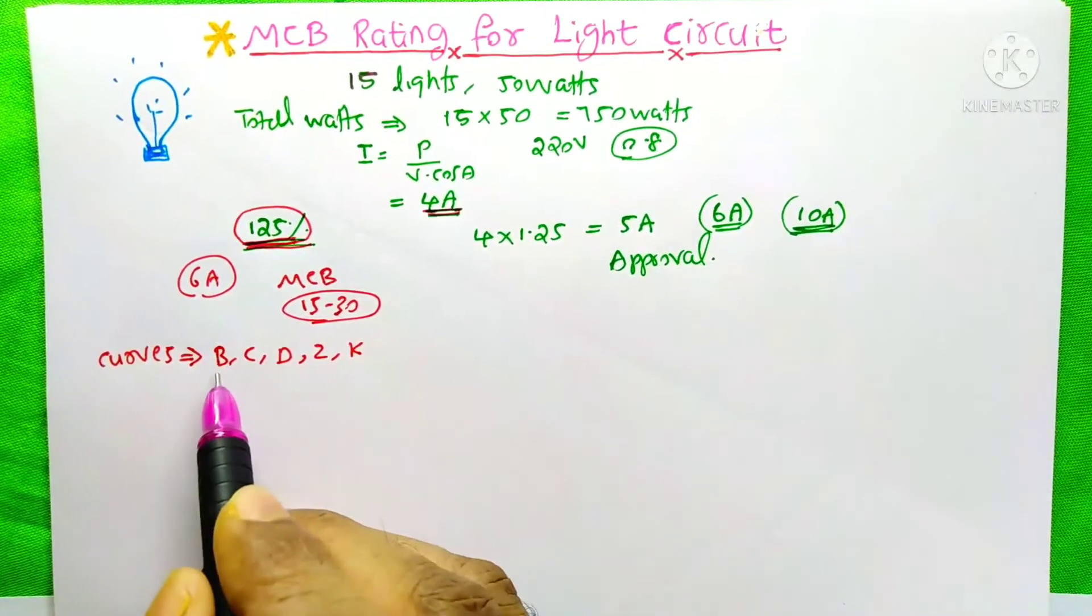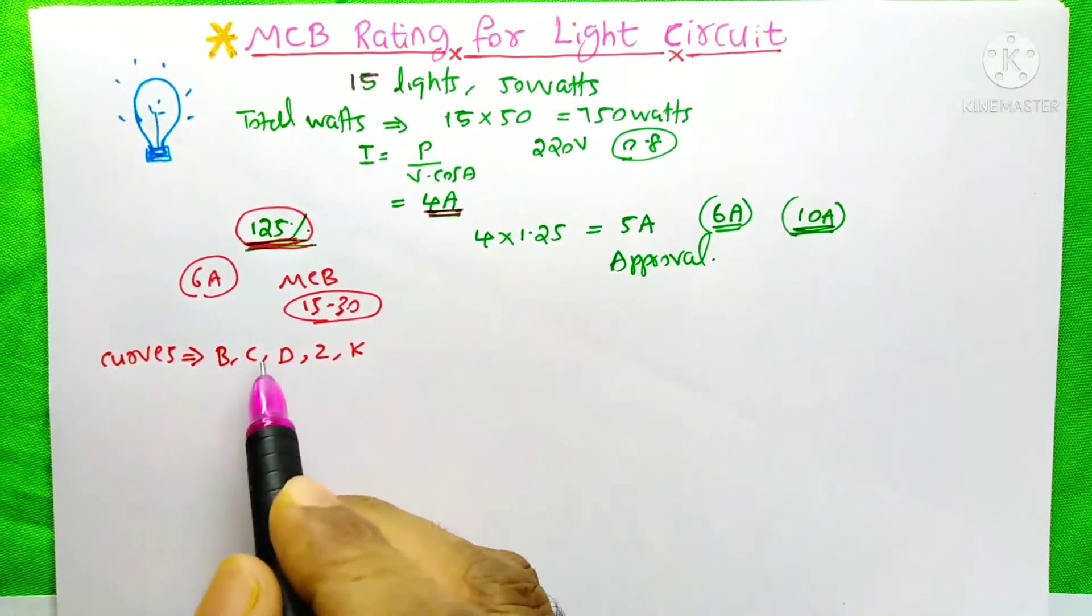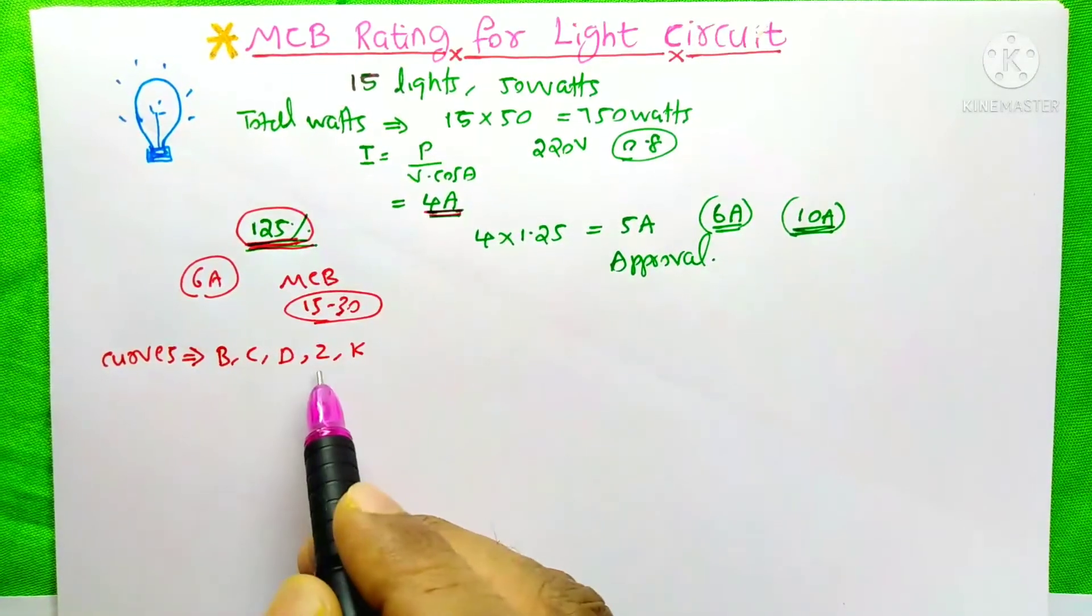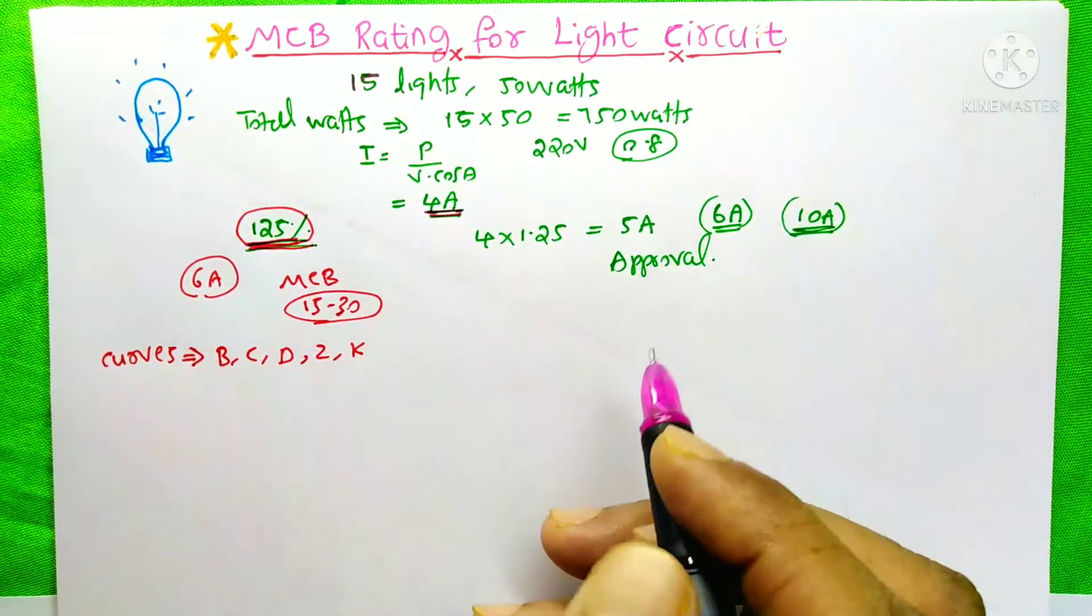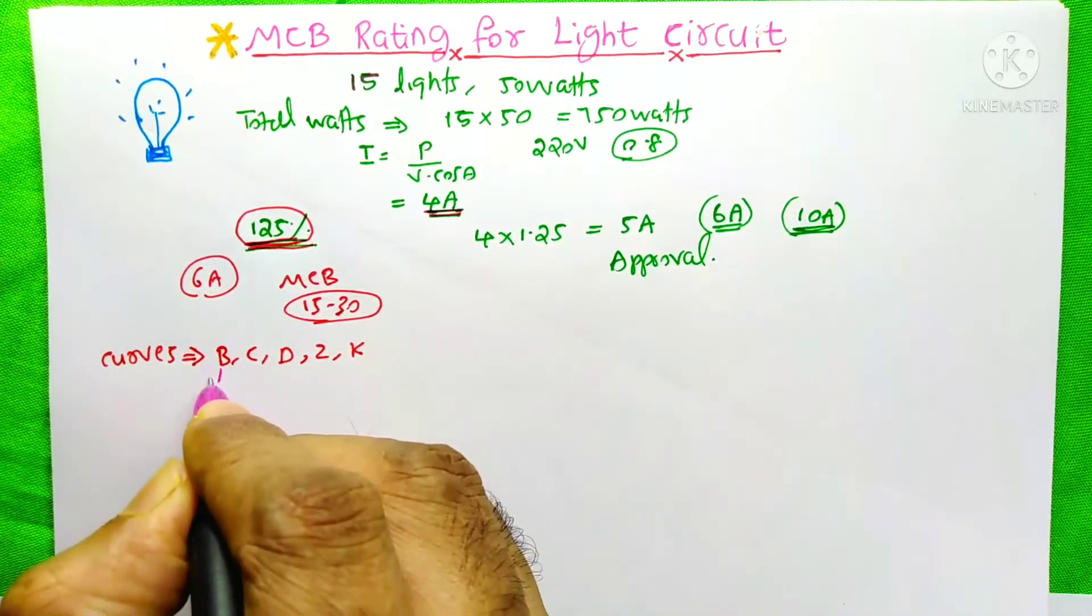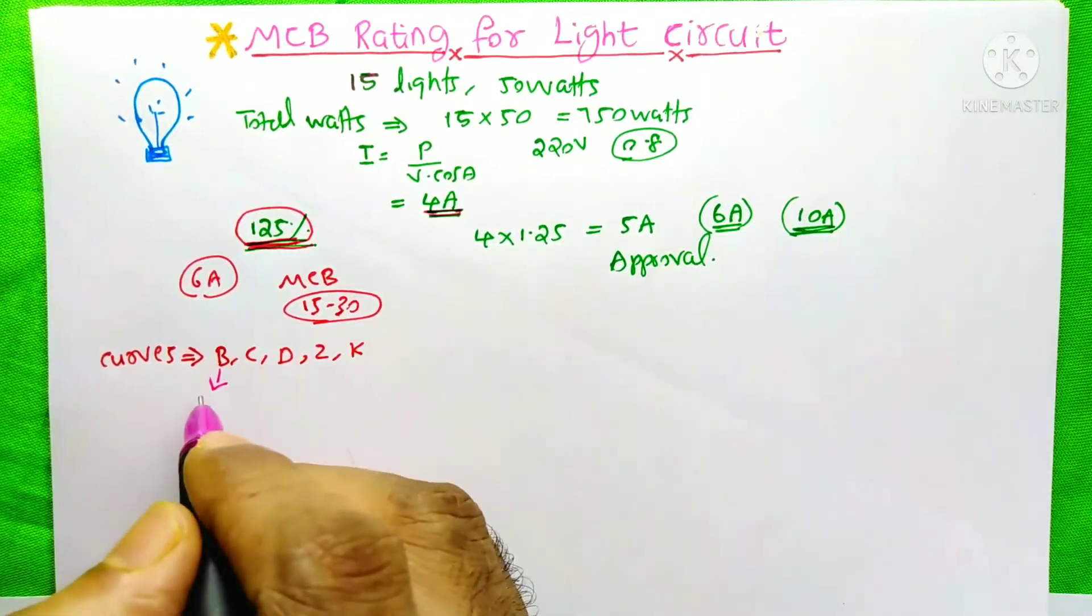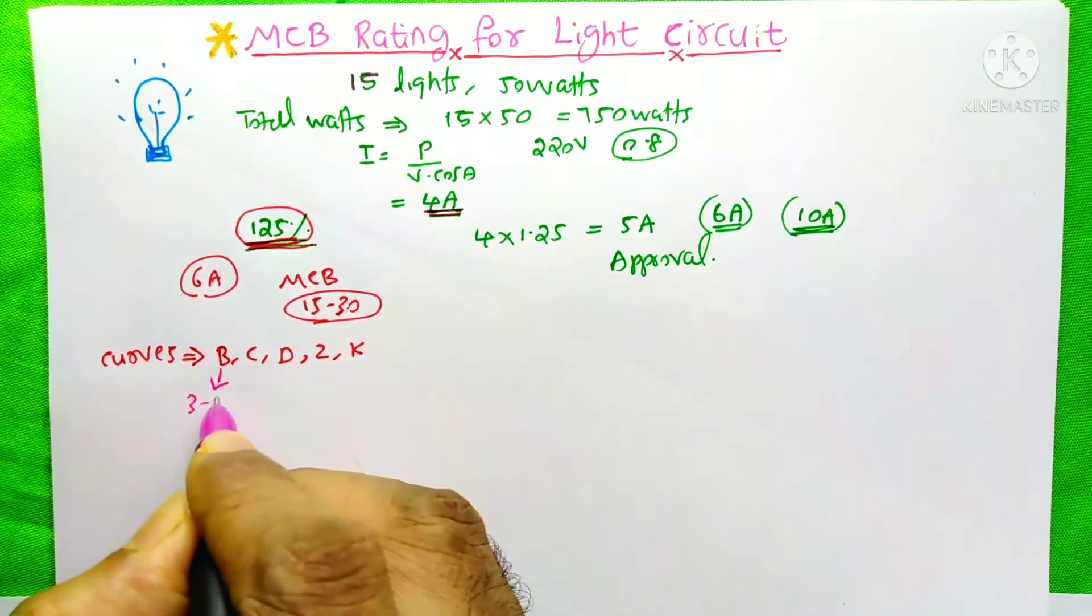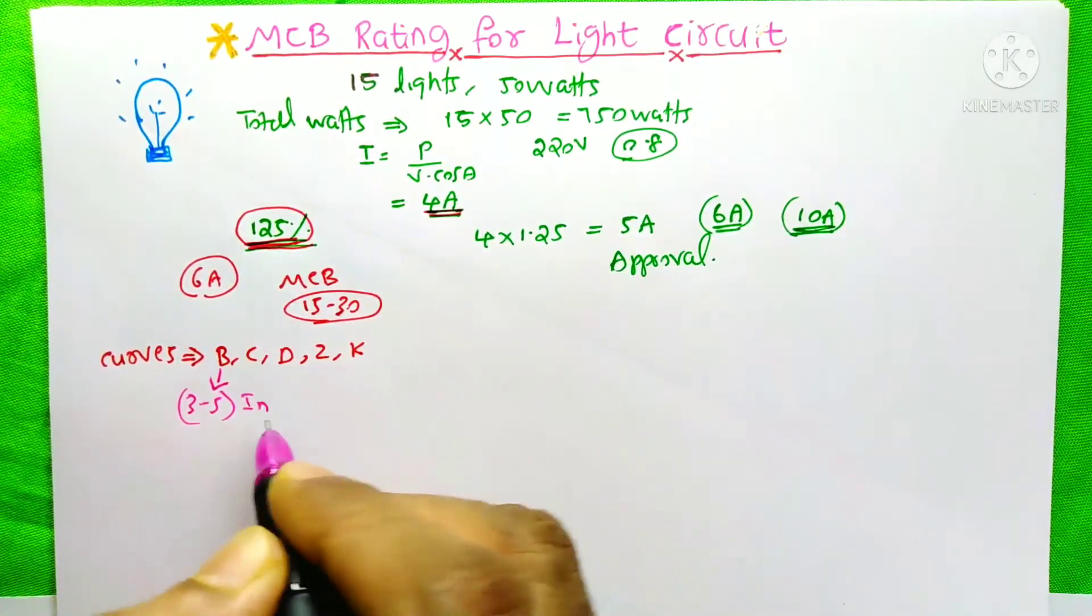The MCB always comes with these curves: B, C, D, Z, K. Which curve will you choose for your light circuit? I recommend only to use the B curve. The B curve allows 3 to 5 times the rated current.